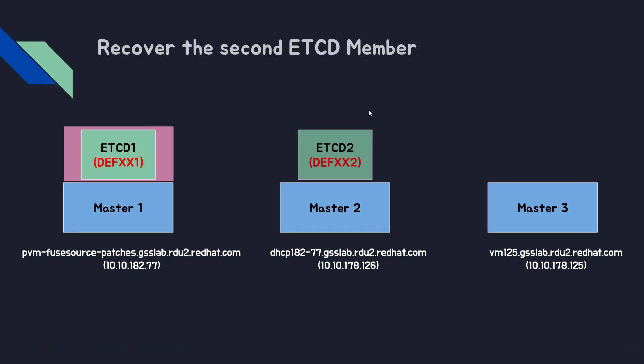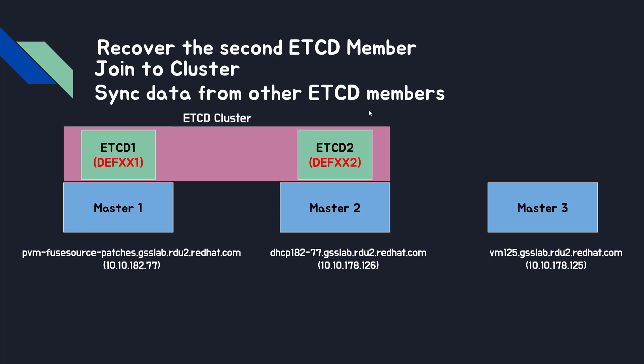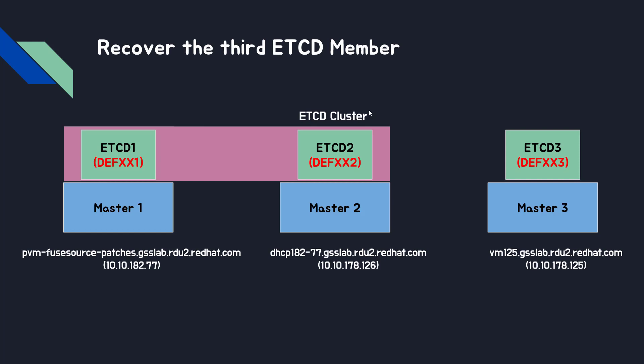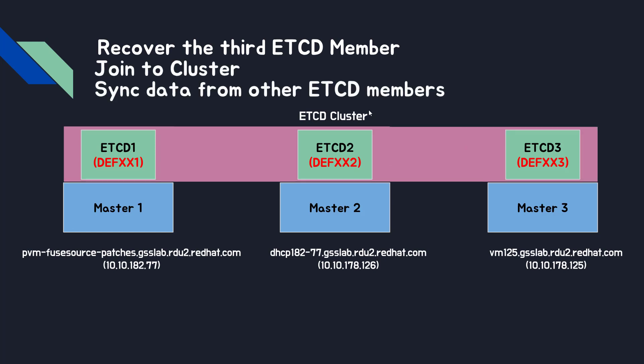First, we recover the second ETCD member. After that, we make it join the cluster, and then automatically ETCD2 will synchronize data from the first ETCD member. Then we recover the last one, which is very similar to the second. We recover the third ETCD member, make it join the cluster, and then it automatically synchronizes data from the other ETCD members. So everything is done — our ETCD is back, and OpenShift is also back.